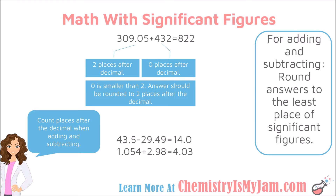Here is another example: 43.5 has one place after the decimal, minus 29.49 which has two places after the decimal. One is smaller than two, so my answer should be rounded to one place after the decimal. Next, 1.054 has three places after the decimal, and 2.98 has two places after the decimal. Two is smaller than three, so my answer should be rounded to two places after the decimal.